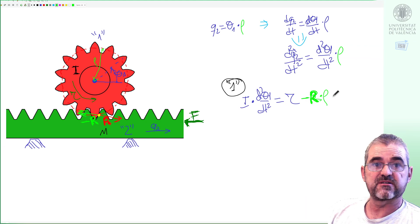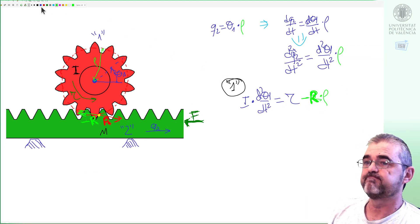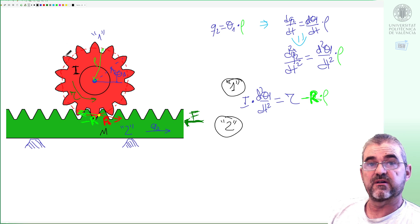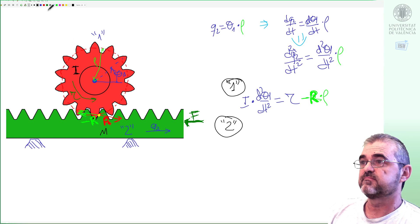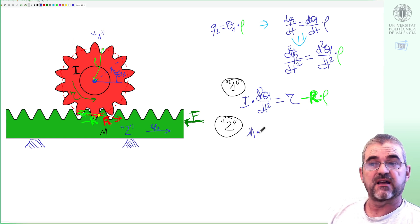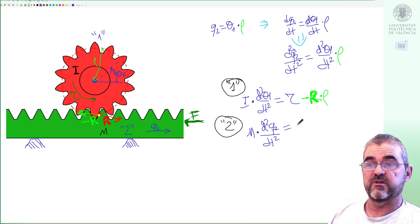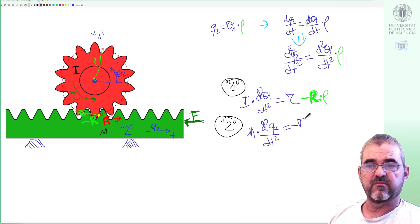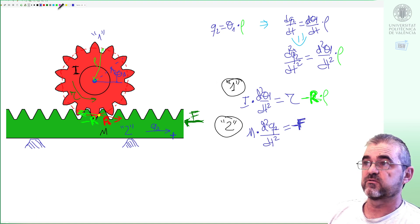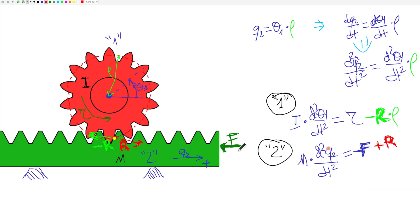If we now write down the Newton equations for body 2, the green body, then we'll have mass times acceleration equal to resulting force, which will be if positive is moving to the right hand side, minus F, and then reaction force will push right.